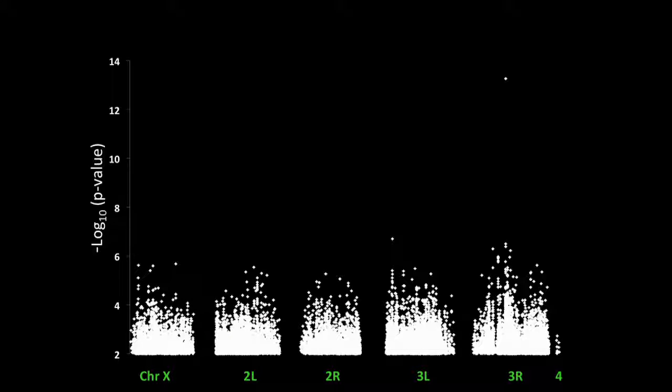We ran a GWAS with that phenotype data and the full genome sequences of each line. This is our data. Anything above this red line is considered highly significant, which leaves us with this SNP up here. It's the only highly significant SNP from this analysis, and it's within spineless.